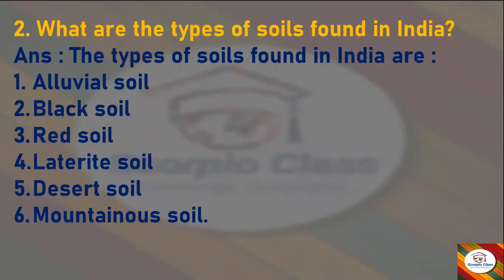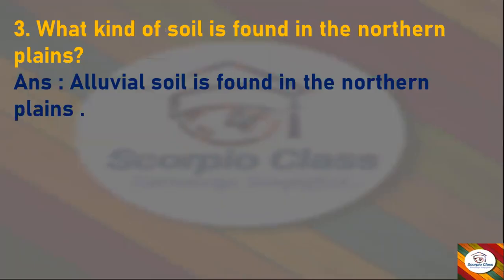Next question: What are the types of soils found in India? Answer: The types of soils found in India are alluvial soil, black soil, red soil, laterite soil, desert soil, and mountainous soil.